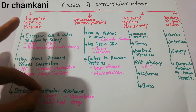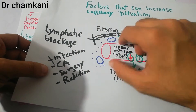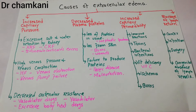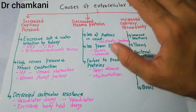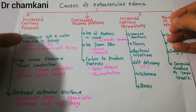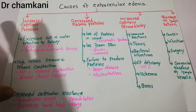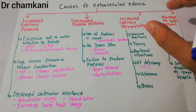Another cause is decreased arteriolar resistance. This occurs with vasodilator drugs that dilate the blood vessels, causing more fluid to come in and less to go out, increasing the capillary hydrostatic pressure. When the heart pumps blood against reduced resistance — due to vasodilators, body heat, or certain drugs — these vessels dilate, pressure increases, and edema occurs. The sub-types of edema due to increased capillary pressure are: excessive salt and water retention, high venous pressure or venous constriction, and decreased arteriolar resistance.